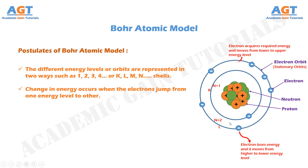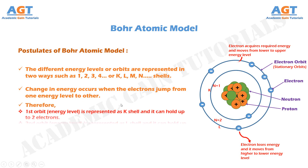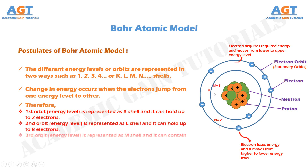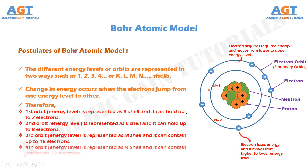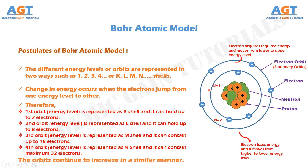The first orbit, or energy level, is represented as the K shell and it can hold up to 2 electrons. The second orbit, or energy level, is represented as the L shell and it can hold up to 8 electrons. The third orbit, or energy level, is represented as the M shell and it can contain up to 18 electrons. The fourth orbit, or energy level, is represented as the N shell and it can contain a maximum of 32 electrons. The orbits continue to increase in a similar manner.